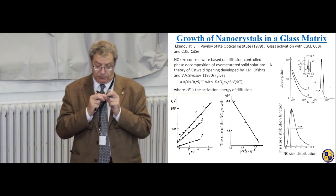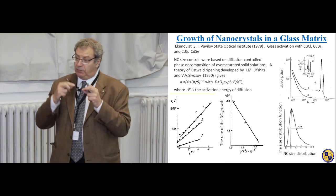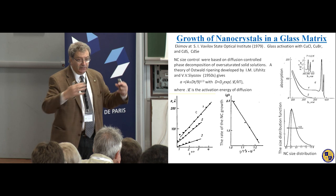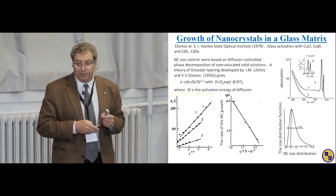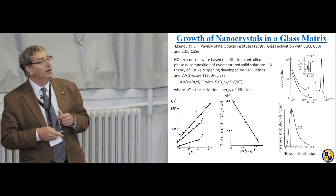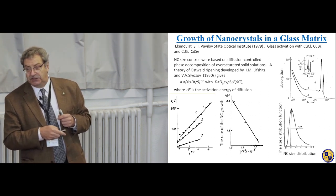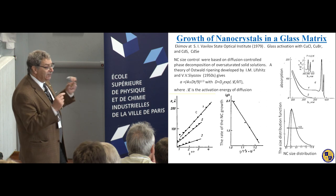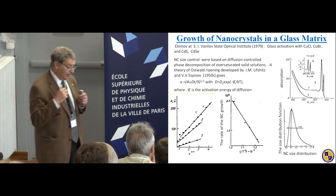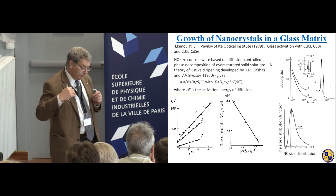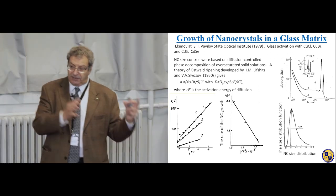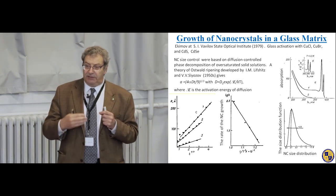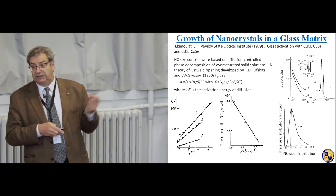During this process, after formation of nuclei, ions and atoms start to move from small nuclei to large nuclei, slowly increasing the size of nanocrystals. The rate of this process is controlled by the diffusion coefficient of the glass, which exponentially depends on activation energy — each glass has its own activation energy. The last stage of this process, when large nanocrystals pick up material from small ones, driven by the large surface energy of small nanocrystals, is called Ostwald ripening in chemistry.